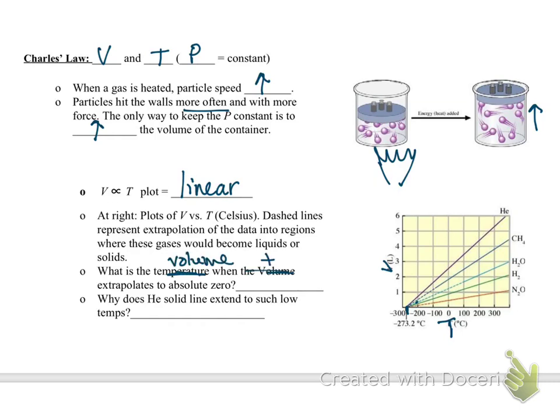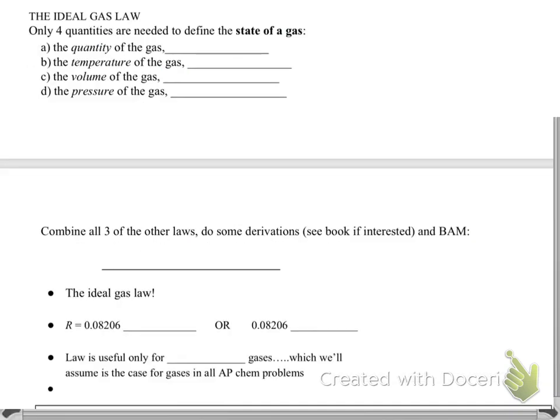But I have a question for you. Why does the helium line extend almost all the way down to absolute zero? Whereas all these other lines have to be extrapolated, meaning they become a liquid before they hit even close to absolute zero. Helium is the only one on here that is a noble gas. It's the one that experiences the least intermolecular forces or the weakest intermolecular forces, the weakest attractions to other molecules. It's going to take the lowest temperature to condense. We'll talk a lot more about that in the future.